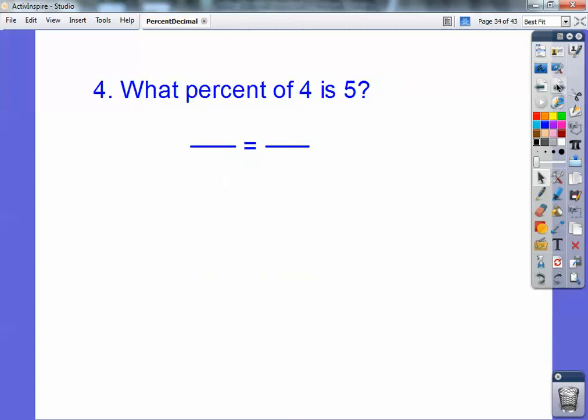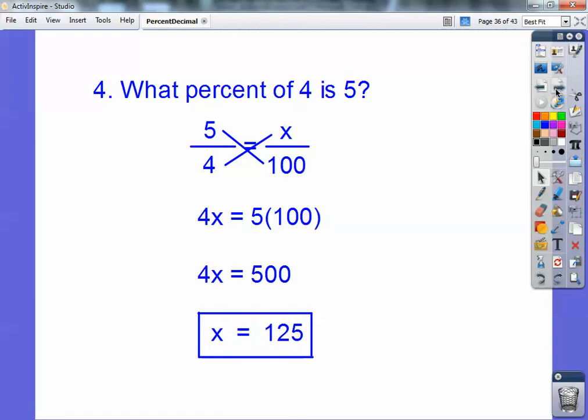What percent of 4 is 5? 100 goes down here. Again, we don't know the percent, so that must be my x. So x goes right here. Here's of 4, so 4 goes right here. And then the leftover piece is 5, so it goes right there. And then go ahead and cross-multiply and solve for x, and you get 125.